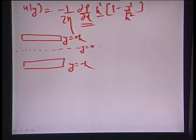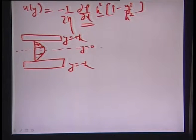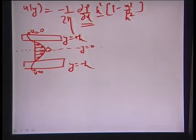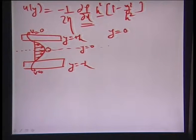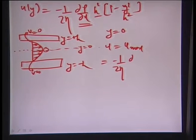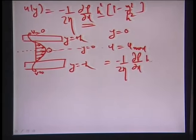If you plot u with respect to y, you get a parabolic profile. The velocity is zero very close to the channel wall on either side and is maximum at the center of the channel. At y = 0, u becomes u_max = −(1/2η)(dp/dx) · h².